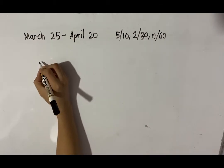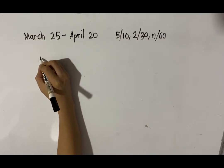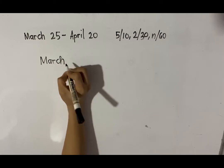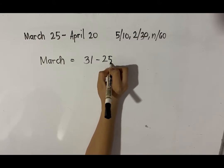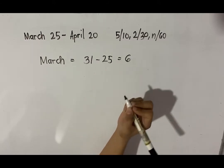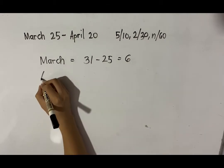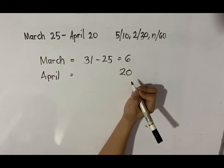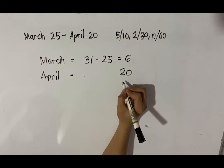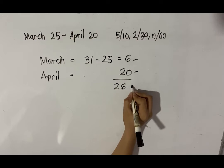How many days are there from March 25 to April 20? Let us compute first for the month of March. Since March has 31 days, 31 minus 25 is 6 days — we have 6 days passed for March. For the month of April, we have 20 days passed since the day of payment is April 20. The total number of days is 6 plus 20 equals 26 days.